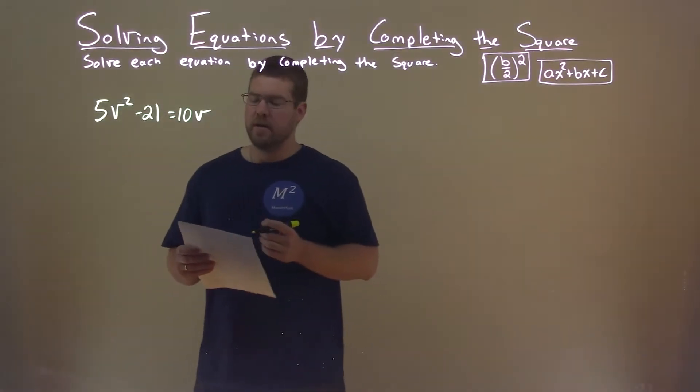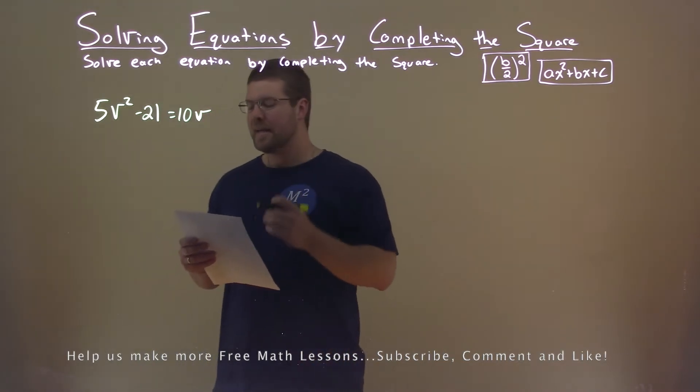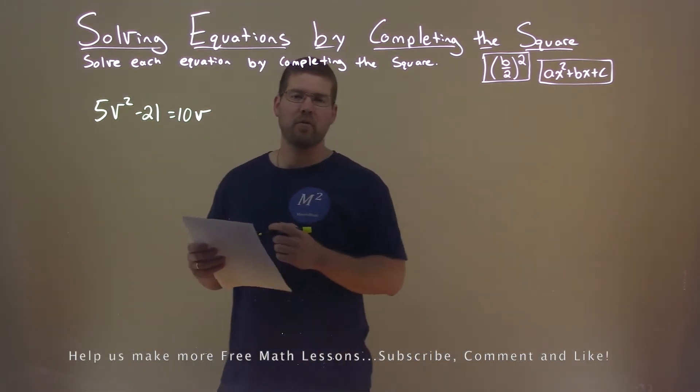We're given this problem right here. 5v squared minus 21 equals 10v, and we want to solve this by completing the square.